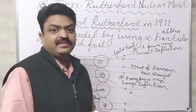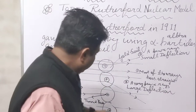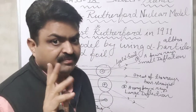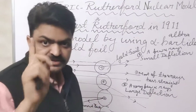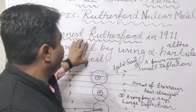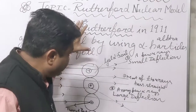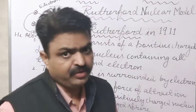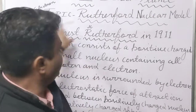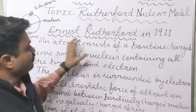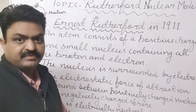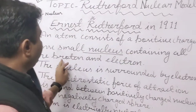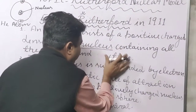He concluded that in the atom there is one dense part, and that dense part has positive charge. So the positively charged dense part of the atom, known as the nucleus, was discovered by Ernest Rutherford. Ernest Rutherford concluded that an atom consists of a positively charged dense small nucleus.